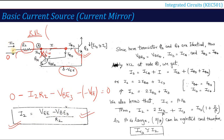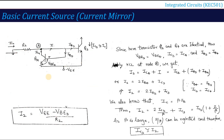We can set the value of I2 by putting in all values. In designing: if you need to produce a 5A current, VEE is fixed, VBE for the transistor is fixed, and I2 is fixed at 5A — so you design the value of R2. This gives the basic concept of the current mirror circuit. Whenever you see this configuration in the 741 IC, the collector current equals the input current — that is our current mirror concept.